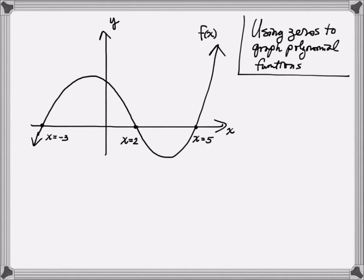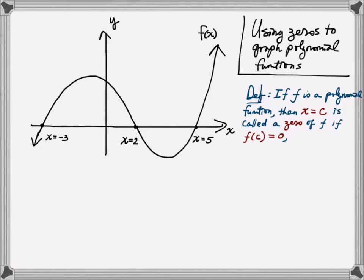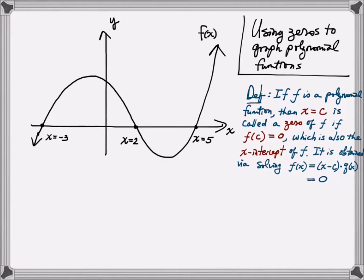In this video lesson today, we'll look at how to use zeros to graph polynomial functions. We're going to introduce some terminology using this following picture. Let's start with the definition of zero. If f is a polynomial function, then x equals c is called a zero of f if f of c is equal to zero.